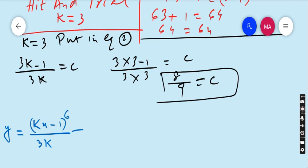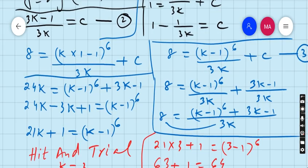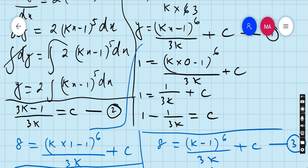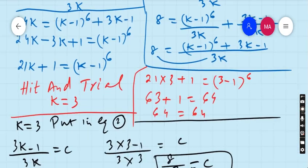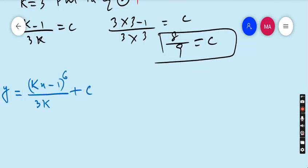This one: (kx - 1) to the power 6 upon 3k plus c. Now put k=3 and c=8/9 in the given equation. So k is 3: (3x - 1) to the power 6 upon 3×3 plus 8/9.